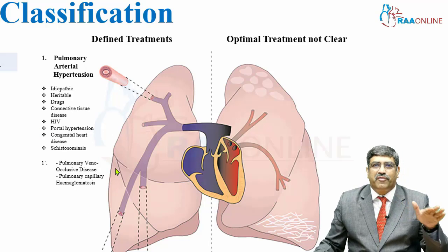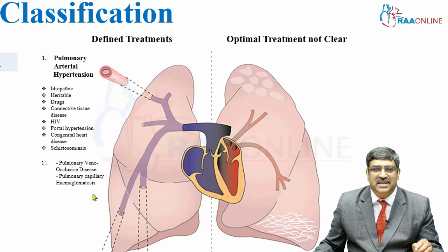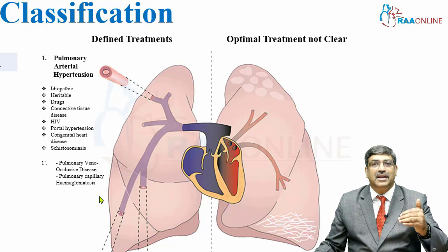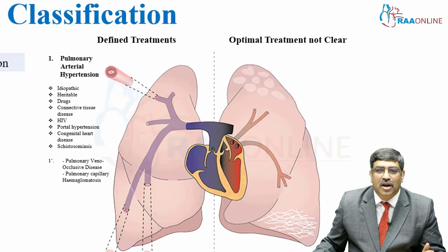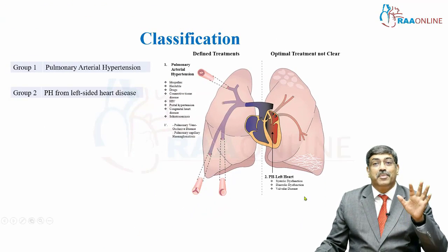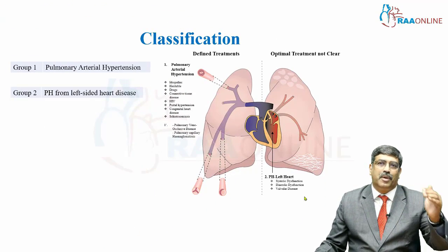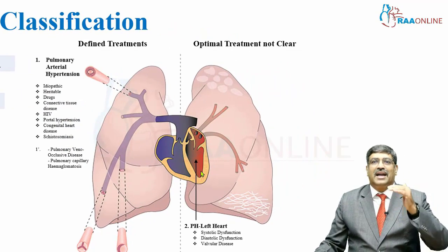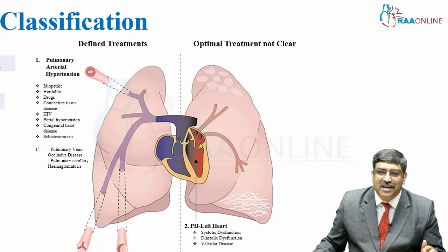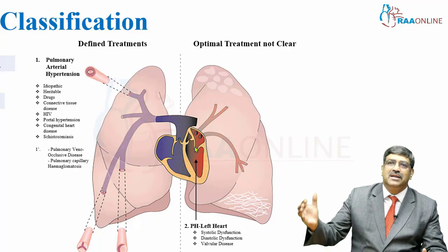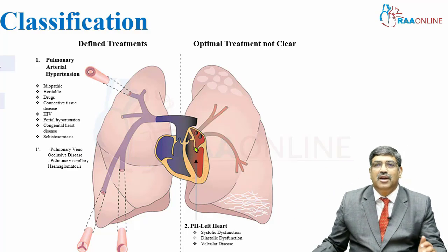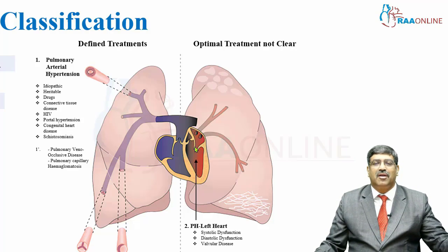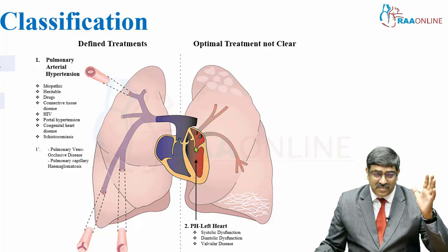A subgroup of Group 1, called Group 1 prime, includes pulmonary veno-occlusive disease and pulmonary capillary hemangiomatosis. Coming to Group 2, which may be the commonest cause for pulmonary hypertension — that is pulmonary hypertension arising from left heart disease. Here, the pressure from the left side of the heart is transmitted to the pulmonary vein, from the pulmonary vein it goes to the capillaries, and then it is reflected on the pulmonary arterial pressure.